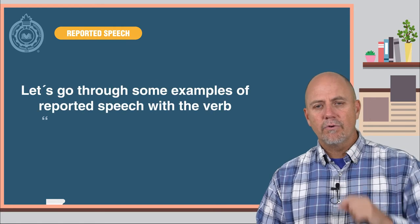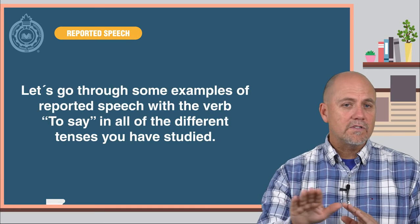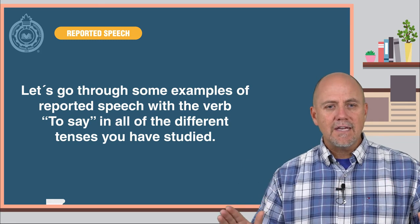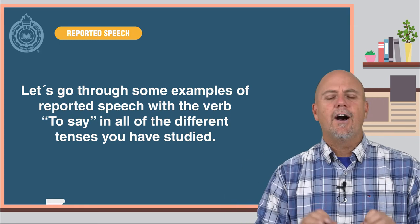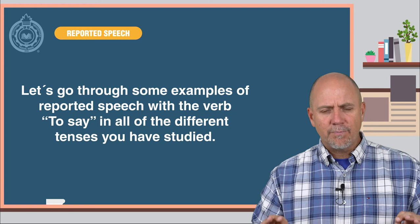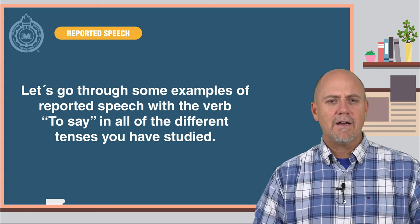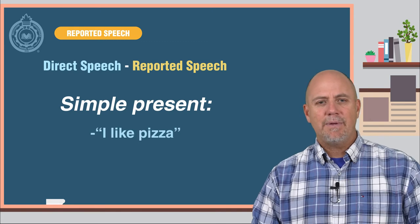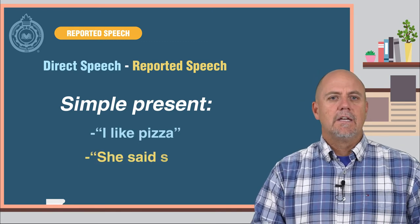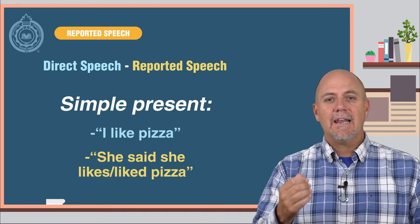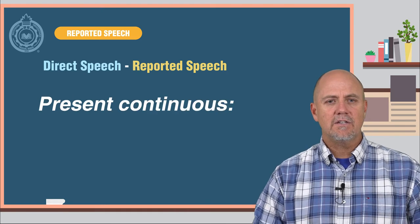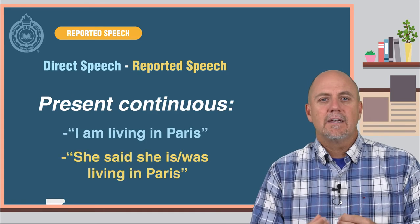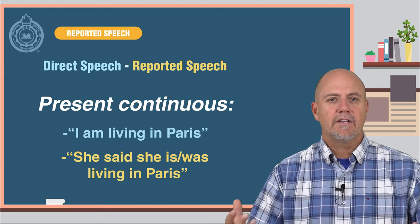Let's go through some examples of reported speech with the verb to say in all of the different tenses you have studied up until this point in your career at Pascual Bravo. Simple present: I like pizza — she said she likes / liked pizza. Present continuous: I am living in Paris — she said she is / was living in Paris.